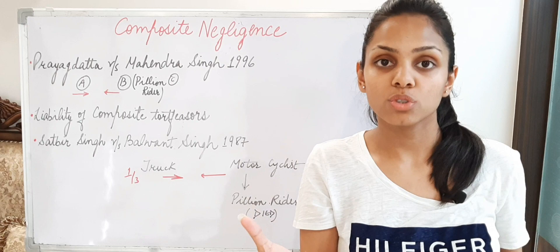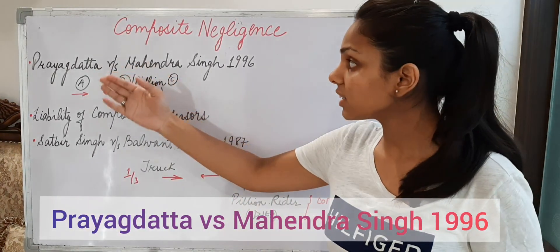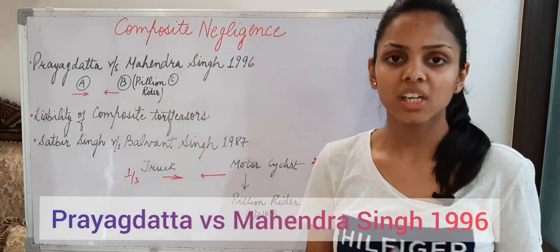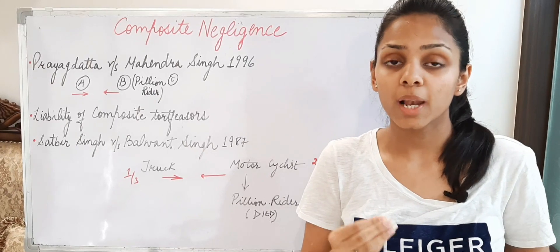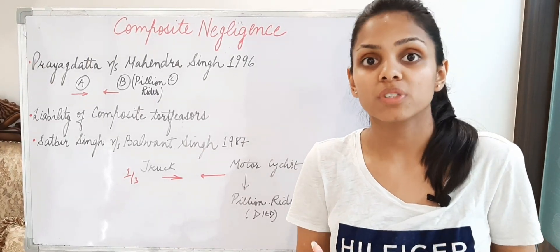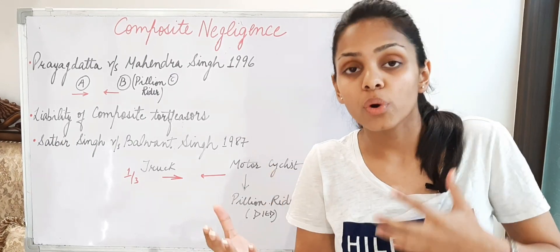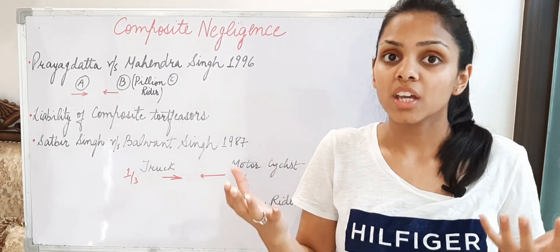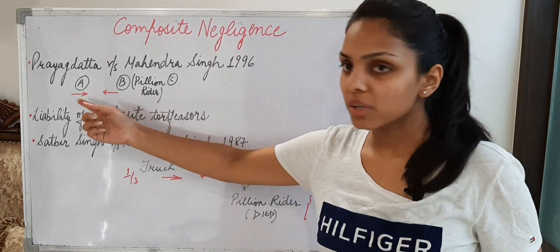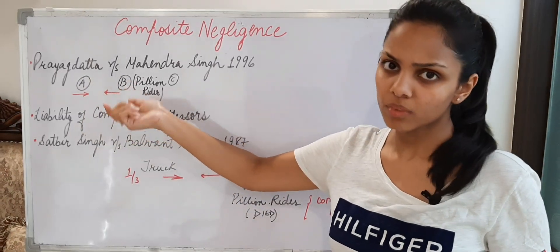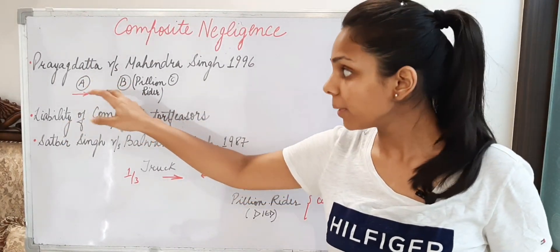Now I'll try to explain this with the help of a case law. The case law is Prayag Dutta versus Mahendra Singh, 1996. What happened in this case? This is a composite negligence case law which will help you understand the meaning of composite negligence — how two or three defendants can be involved and how the plaintiff sustains injury due to their negligent acts. So here, there was a person A and a person B. Let's say A was a truck driver and B was a motorcyclist.